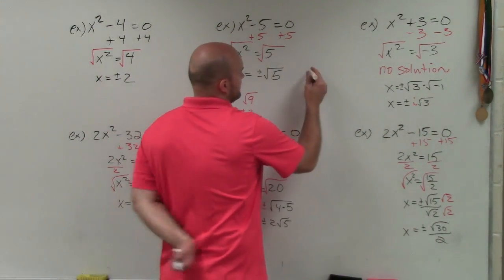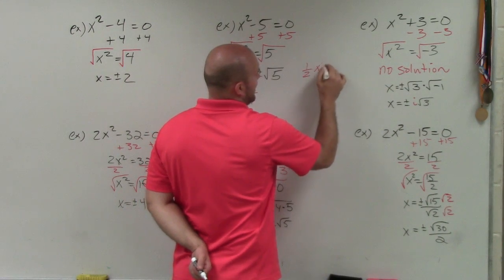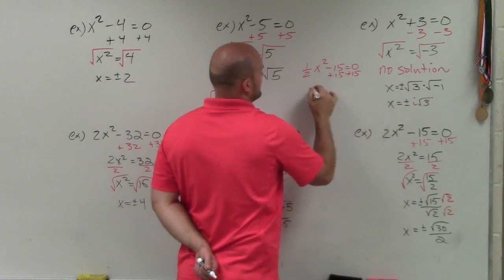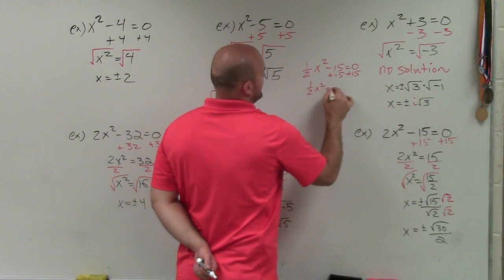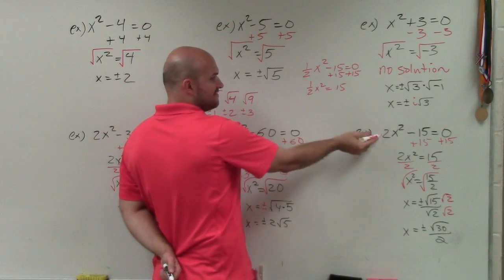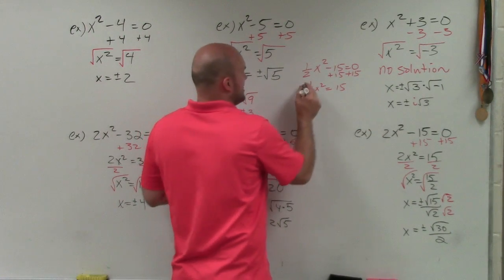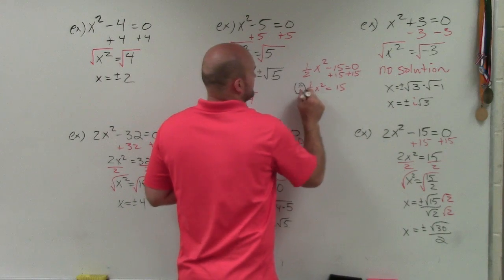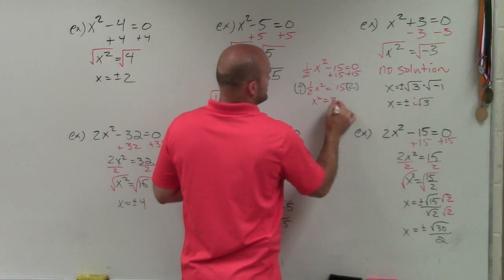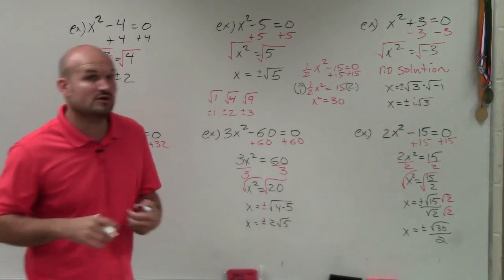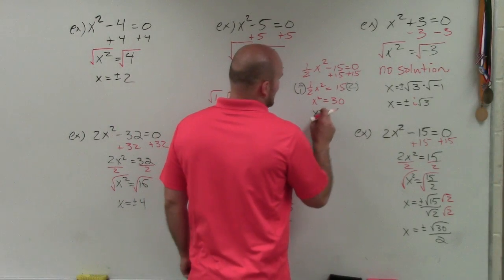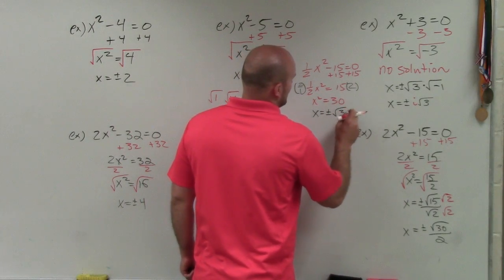Real quick — let's see what would happen if I have one-half x squared minus 15 equals 0. I would add 15 to both sides: one-half x squared equals 15. Since x squared is multiplied by one-half, the best thing to do is multiply by the reciprocal, which is 2. So I'd have x squared equals 30. Since 30 is not a perfect square, nor does a perfect square divide evenly into 30, my final answer is x equals plus or minus the square root of 30.